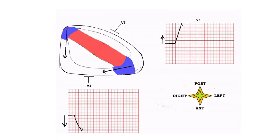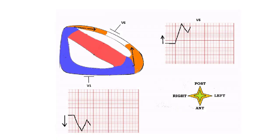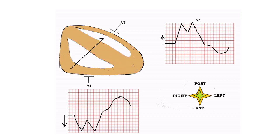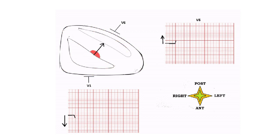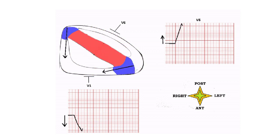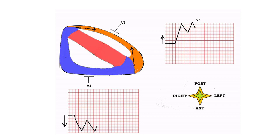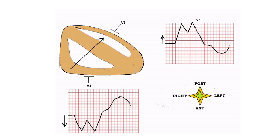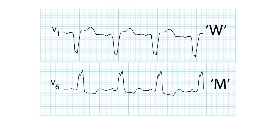This leads to negative STT wave changes in lead V6 and positive STT wave changes in lead V1. This is the final morphology. We can see the W pattern in lead V1, with STT wave changes in the opposite direction. We can see the M pattern in lead V6, with STT wave changes also in the opposite direction. This is known as appropriate discordance, and this is to be expected in left bundle branch block.